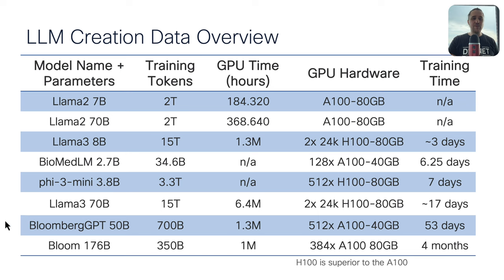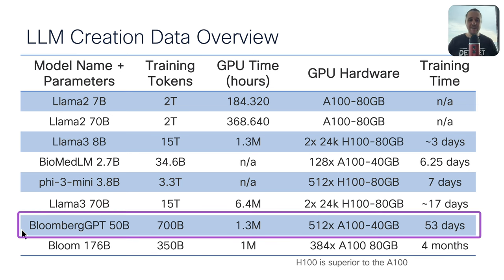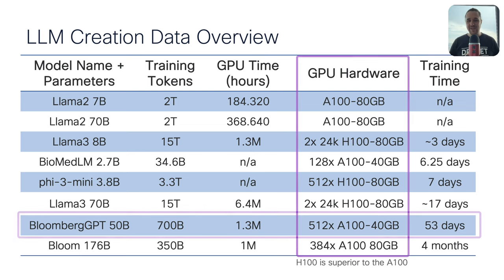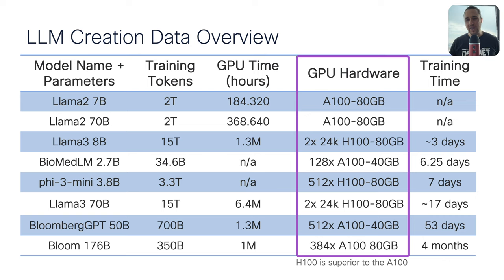An interesting example I'd like to highlight is Bloomberg GPT, because they basically built their own GPT, their own language model. They used 700 billion training tokens with their proprietary data but also publicly available financial data. They had about 1.3 million GPU hours and used 512 A100 NVIDIA GPUs. The training time took 53 days. Only H100 and A100 NVIDIA GPUs are listed because these are the really powerful, performant GPUs specifically for high computation where large language models can be created.